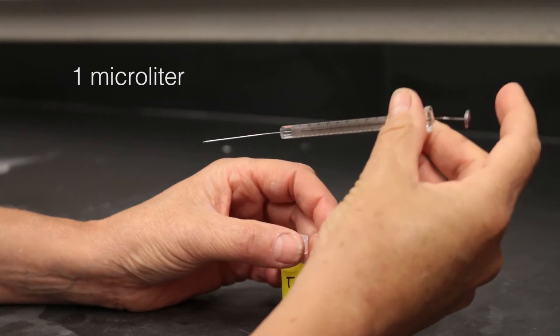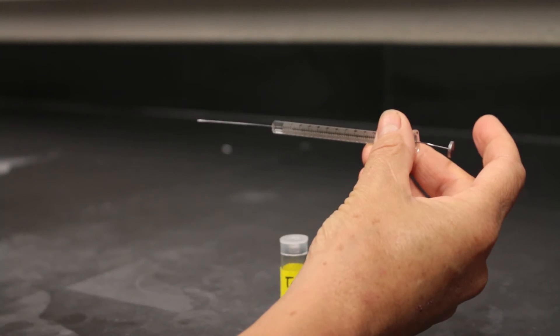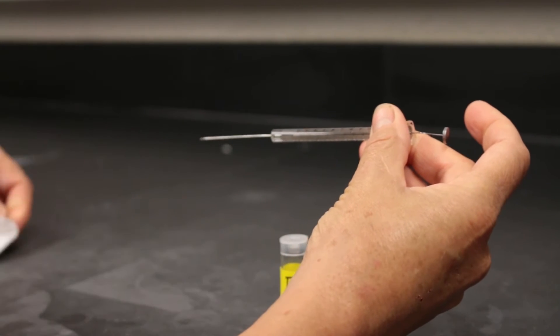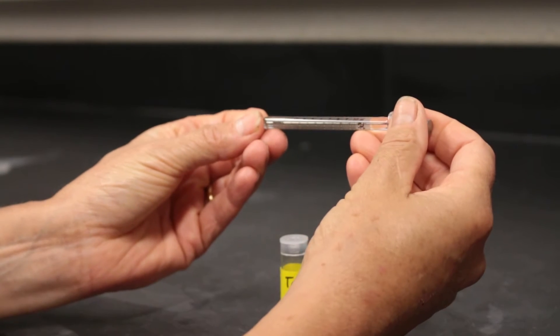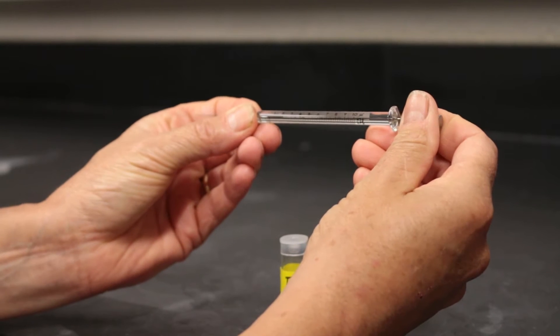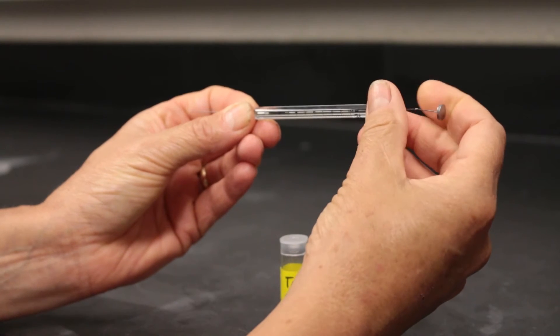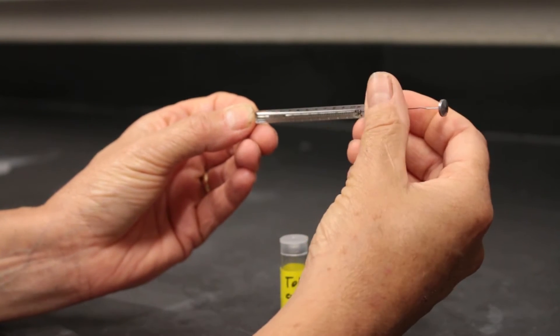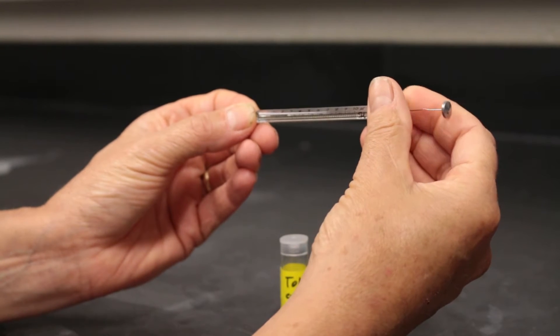Remove your syringe from the sample. Wipe the needle with a kim wipe. You can verify your sample in the syringe by pulling up the plunger until you see an air bubble after your sample. Now you're ready for the injection.